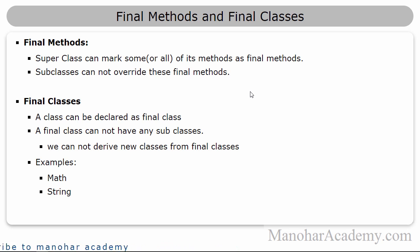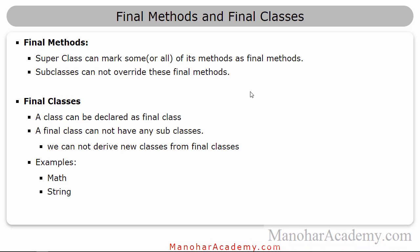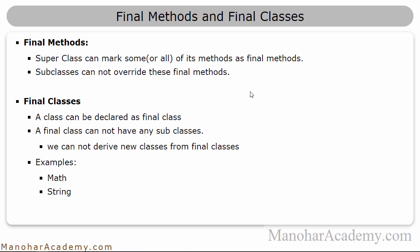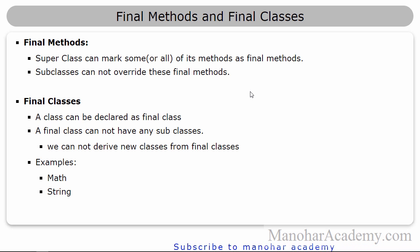Previously we have seen that whatever methods the subclasses are inheriting, they can override that particular behavior so that dynamic polymorphism will work — whenever the method is called, based on the object, the appropriate version of the method will be called. But if your method is declared as final, the subclasses cannot override those behaviors.